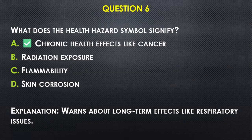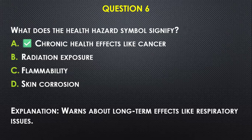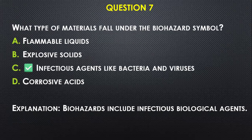Question number six: What does the health hazard symbol signify? A) chronic health effects like cancer, B) radiation exposure, C) flammability, D) skin corrosion. We go with A — chronic health effects. Chronic means long-term; not only cancer, but also respiratory issues, fertility and reproductive issues are also associated with those agents.